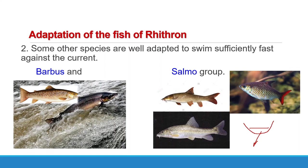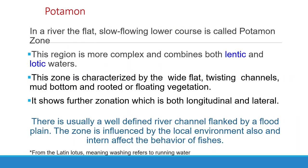Because of the harshness of the habitat, diversity of resident species tends to be low in the Rhithron. In a river, the flat slow-flowing lower course is called the Potamon zone. The Potamon zone is characterized by wide, flat, twisting channels, mud bottoms, and rooted and floating vegetation. The Potamon zone shows further zonation which is both longitudinal and lateral.